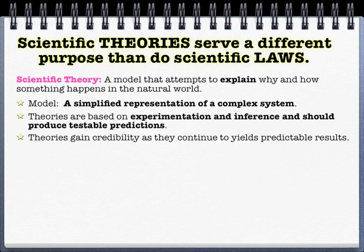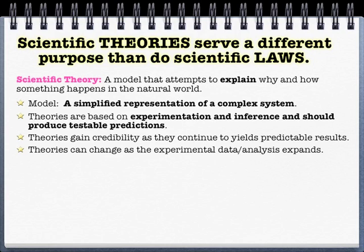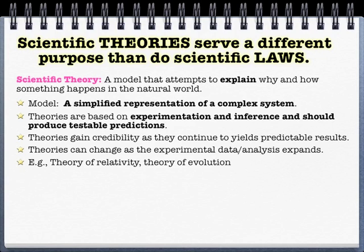Even the best theory can be wrong. We certainly have models of the atom that have changed over time, and once we have new evidence, our theory of what atoms are has changed. The theory of relativity is trying to explain the observations Einstein saw out in nature. And the theory of evolution is attempting to explain the evidence we see involving the change in systems over time. You can certainly have another explanation of why things change over time, and if it can be evaluated in a scientific way, it belongs in the scientific arena. But if it can't be evaluated scientifically, then it doesn't become a scientific theory.